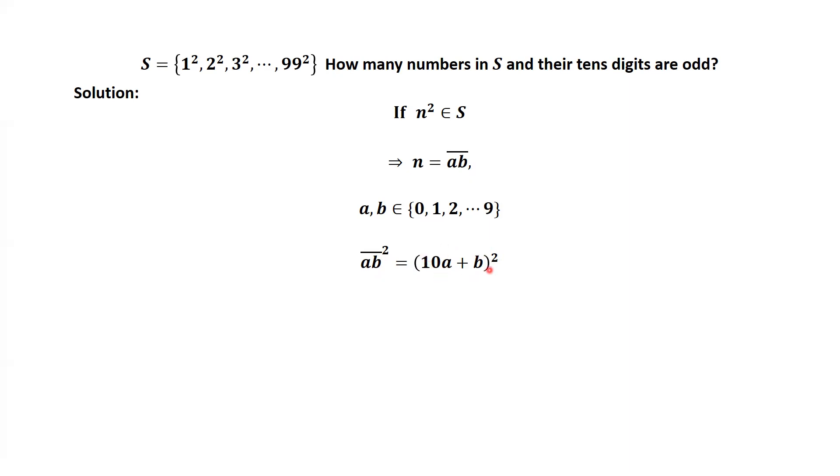Simplify the right-hand side. We have 100 times A square plus 20AB plus B square. Look at the first term, 100 times A square. If A is zero, this part is zero. That means the tenth digit for this part is zero, which is even. If A is not zero, the tenth digit is zero because the last two digits for this number are zero-zero. The tenth digit is even.